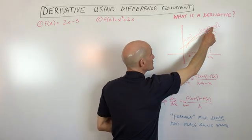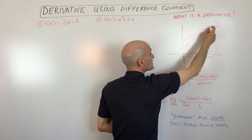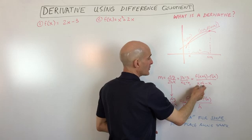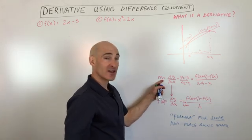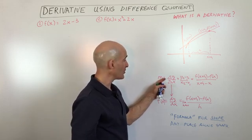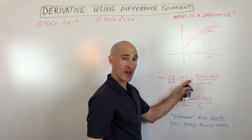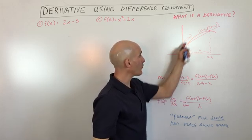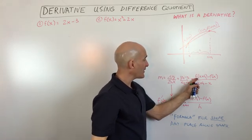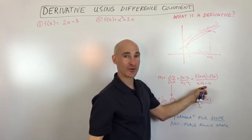All I did is I took this y value minus this y value — f of x plus h minus f of x — divided by this x value minus this x value, so x plus h minus x. All we're doing is finding a formula for the slope: m equals the change in y over the change in x — delta y divided by delta x. Subtracting y values and x values gives us the difference quotient.